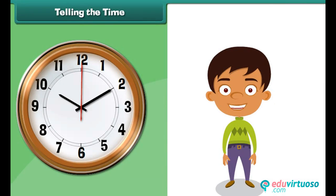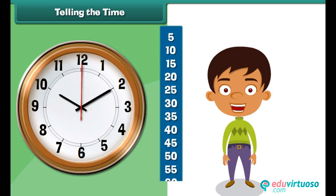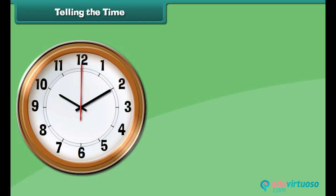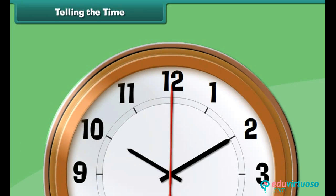Do you all know the table of five? Let us revise it. The table of five is displayed on screen. You can read the time easily if you know the table of number five. The minute and hour hands are read differently. To know the position of the hour hand, we read the numbers written on the clock face. And to know the position of the minute hand, we need to read the smaller divisions.